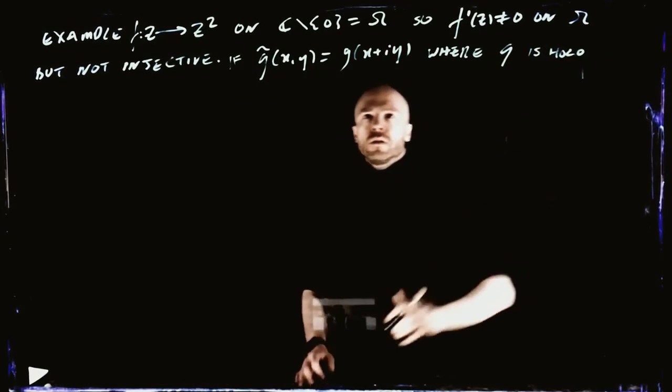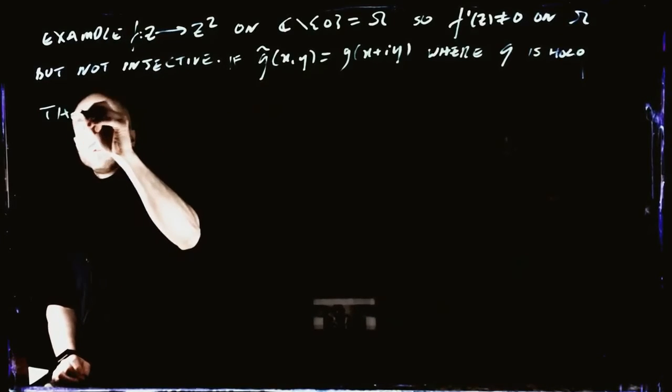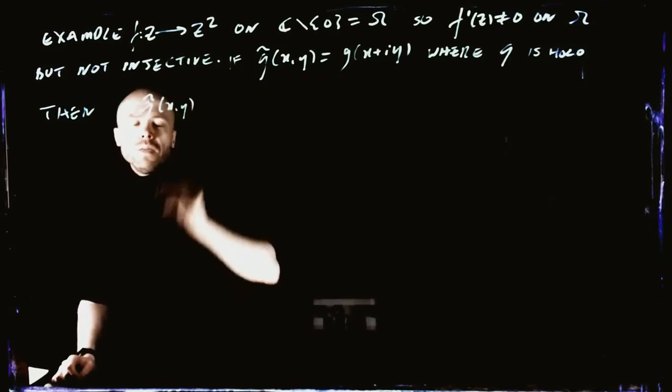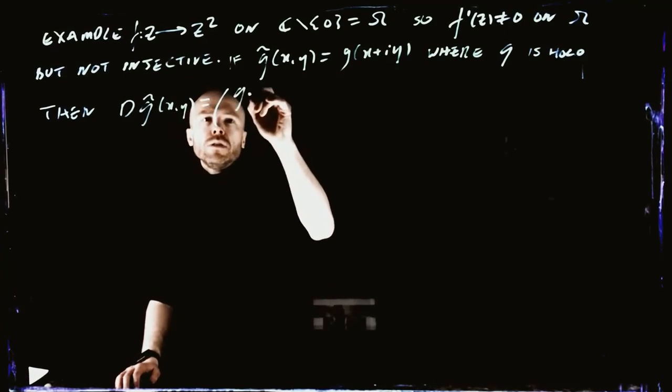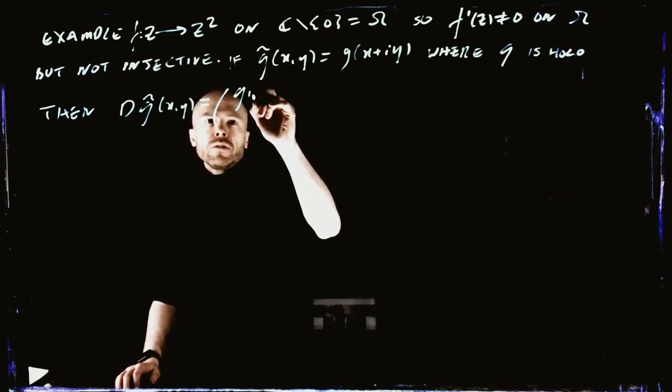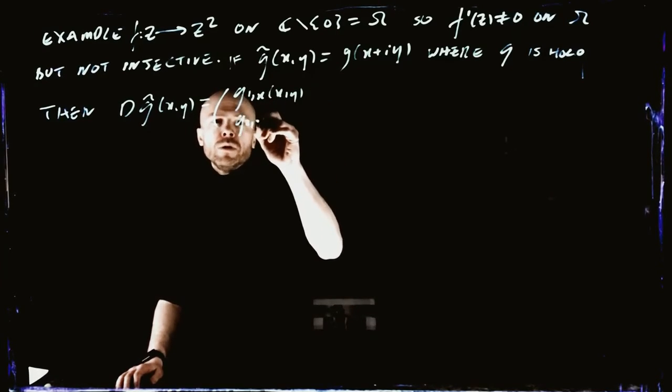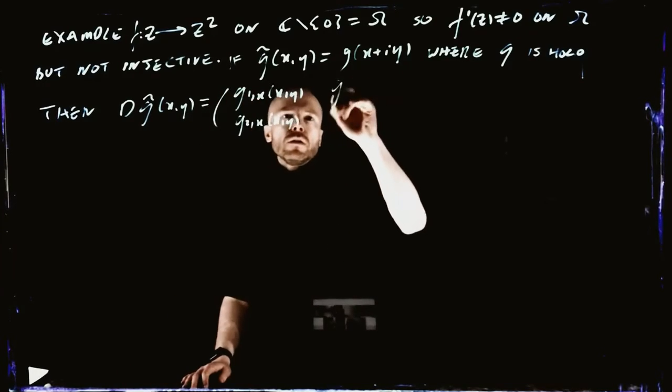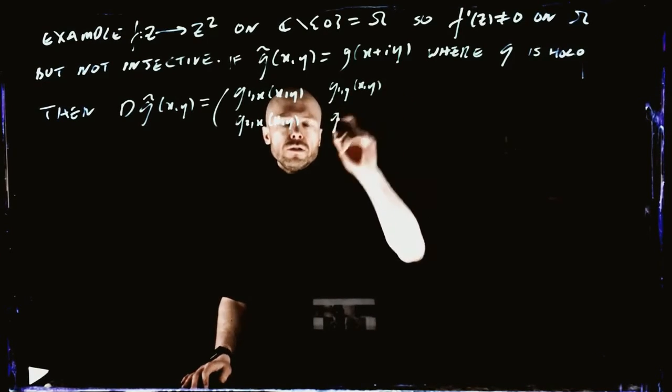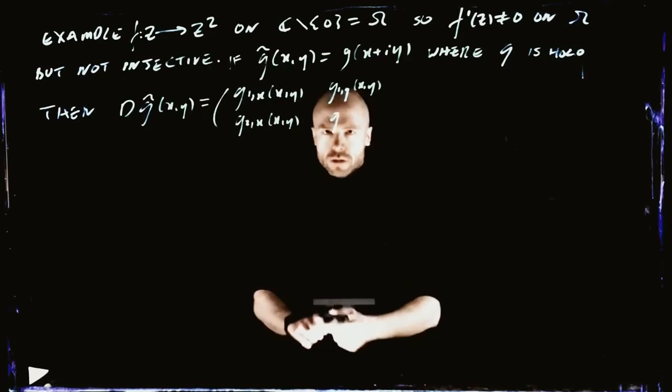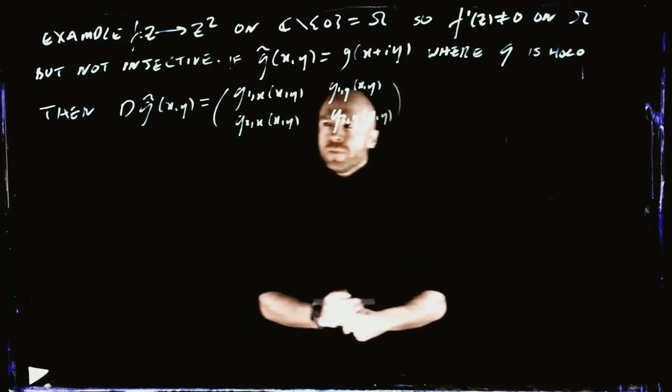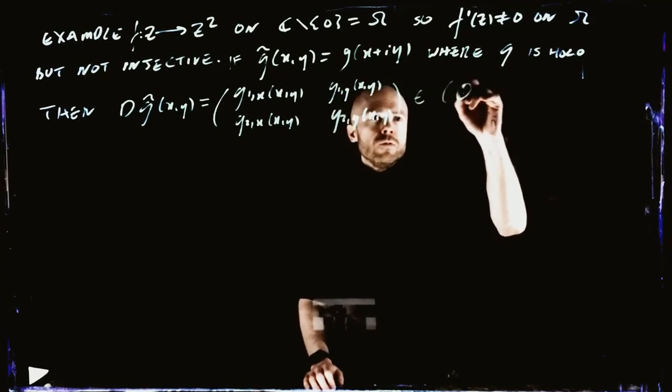If G is holomorphic, then the gradient of this guy is a two-by-two matrix. It's G1_x, G2_x, G1_y, G2_y. And we saw that this belongs to these conformal matrices.